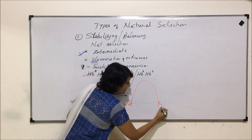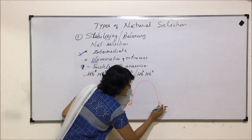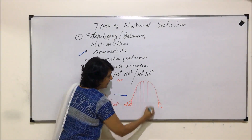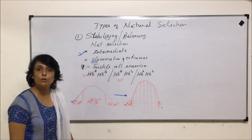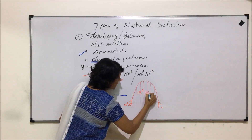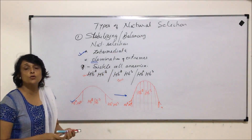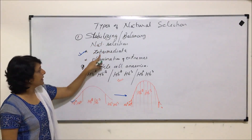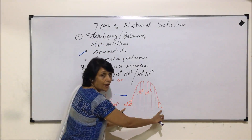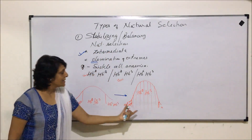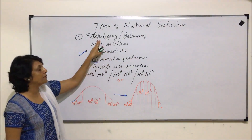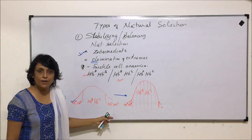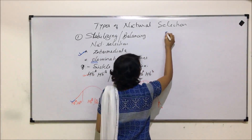The extremes still exist but in very small numbers, while the middle — HbA HbS — represents the maximum number of surviving individuals. Nature has selected HbA HbS because it is the most suitable condition for that malaria-endemic region. By selecting the intermediate and eliminating the extremes, this is called stabilizing or balancing natural selection.